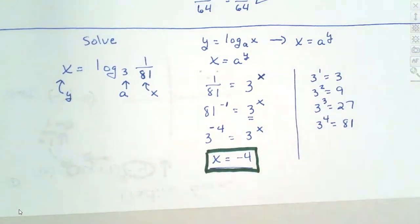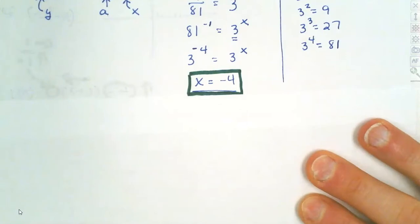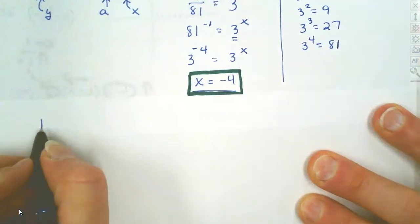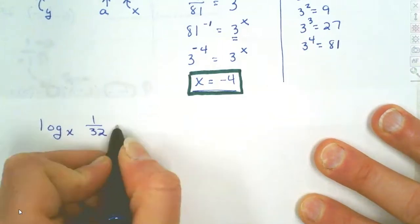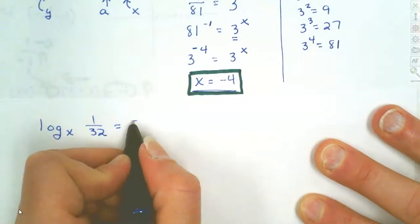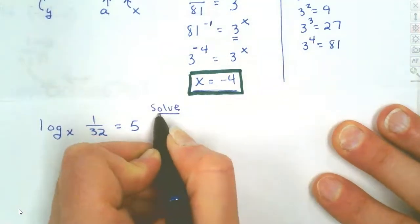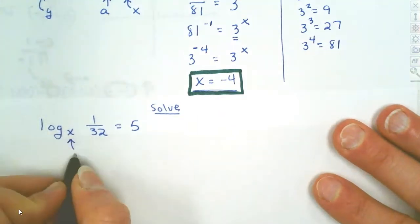Let's do a couple more of these. Next, we're going to have to find the base. We've got log base x of 1 over 32 equals 5, and we're trying to find the missing component — the base x. So x is going to be your a component.